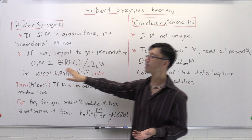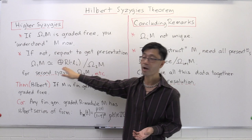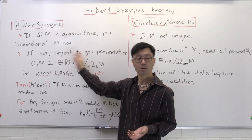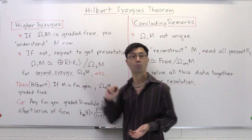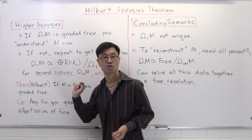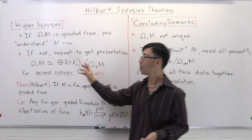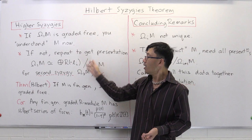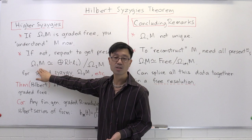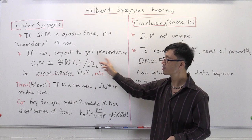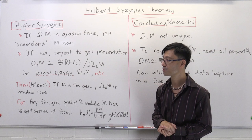If Ω₁(M) is not graded free, you can repeat the procedure. Write Ω₁(M) as a quotient of a graded free module — a direct sum of R(−l_i) — modulo the kernel of that surjective map constructed by taking homogeneous generators of this first syzygy. That kernel we call Ω₂(M), the second syzygy of M. If Ω₂(M) is graded free, you can reconstruct the first syzygy and hence M itself. If not, you repeat as needed to get the third, fourth, and so forth syzygy.